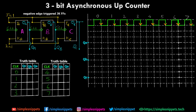As you can see on the screen, it is a negative edge triggered JK flip-flop. We are using a JK flip-flop — you can also use a D or T flip-flop, but here we use a JK flip-flop that is negatively edge triggered, which means at every negative edge the flip-flop will be activated. We've already covered JK flip-flop edge triggering in this playlist, so I hope you're already acquainted with those concepts.